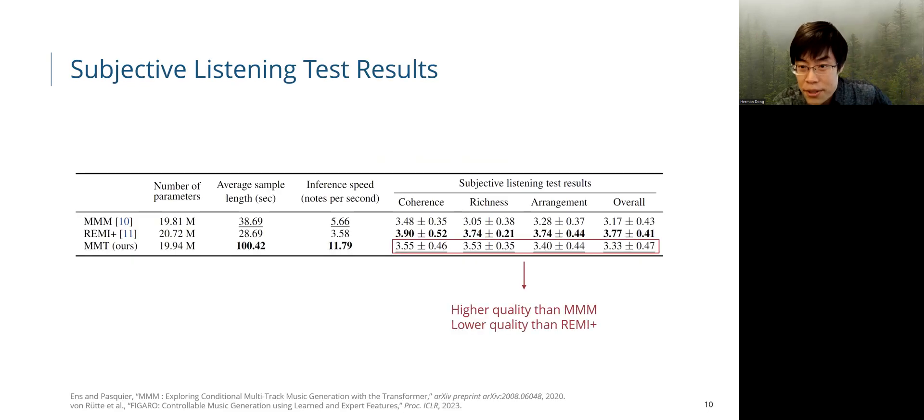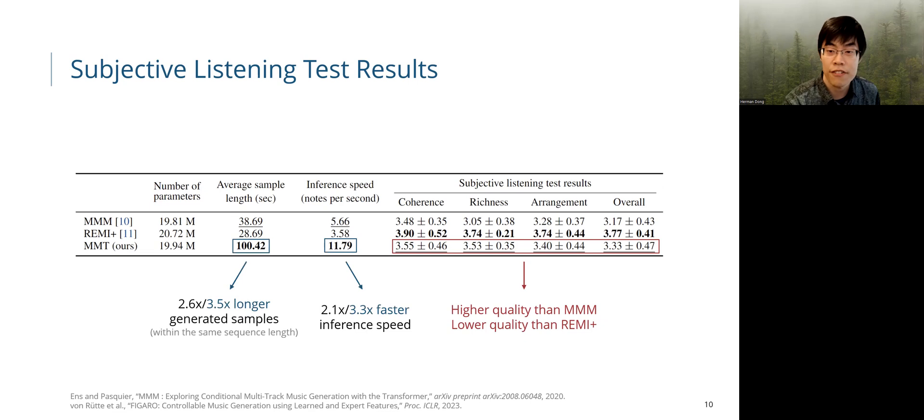To evaluate our proposed system, we conduct a subjective listening test to compare the MMT representation against two existing representations. We can see that MMT outperforms the MuseNet representation, while underperforms the REMI Plus representation. However, we should also note that our MMT model can produce 3.5 times longer samples within the same sequence length and offers a 3.3 times faster inference speed compared to the REMI Plus model. So here we can clearly see the trade-off between inference speed and the output quality.